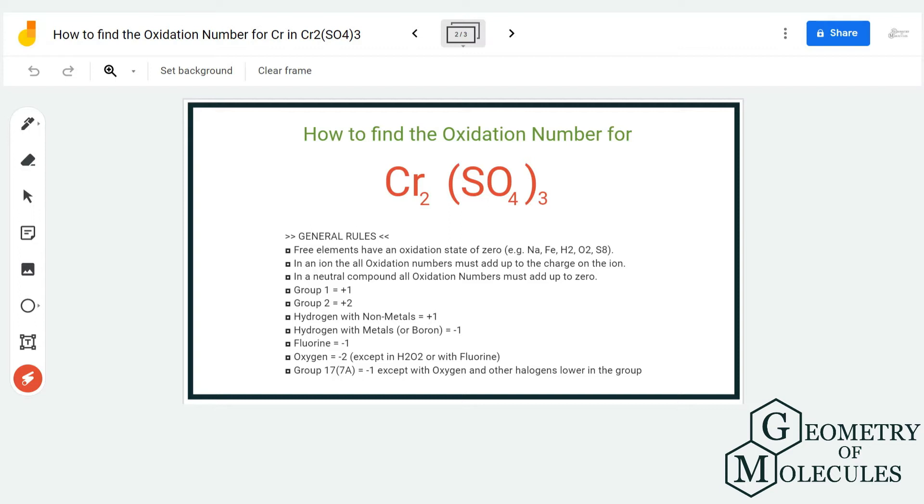Now, to find out the charges for Cr₂, we're first going to look at the charges of SO₄. We can also follow these general rules that can help you understand the process better. The SO₄ as a group has a charge of -2.